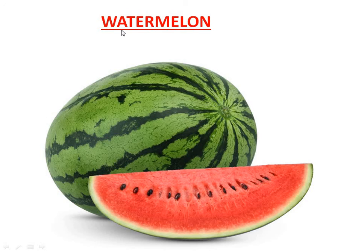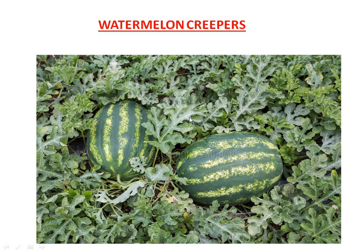Now coming to the next fruit — it is watermelon. The spelling is W-A-T-E-R-M-E-L-O-N, watermelon. It is a big fruit. These are the watermelon creepers — watermelon grows on the sand and it is a creeper. These are watermelons grown on the land.